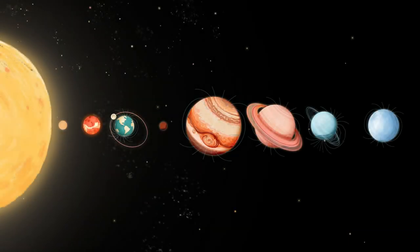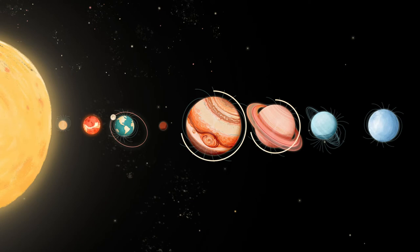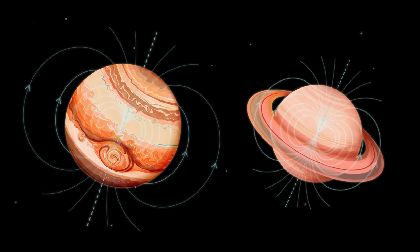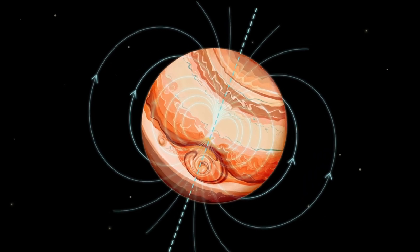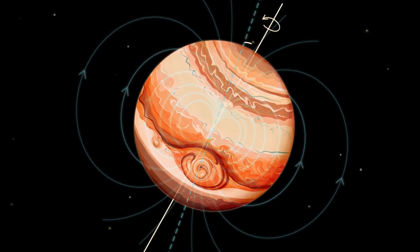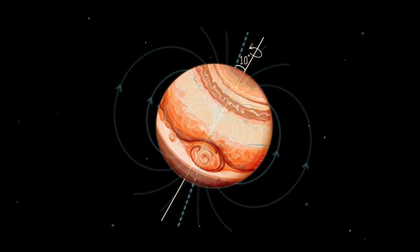As we travel farther out into the solar system, we encounter the gas giants, Jupiter and Saturn. Similar to Earth, Jupiter's and Saturn's magnetic fields look a lot like that of a bar magnet. Usually, the magnetic axis of a planet is tilted away from its rotation axis, which is what we see for Earth and Jupiter.